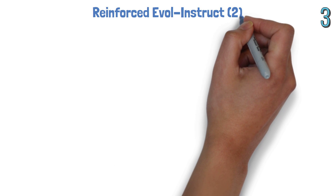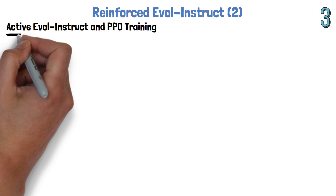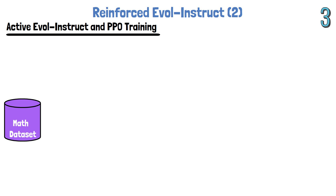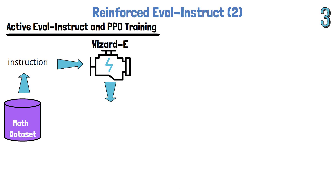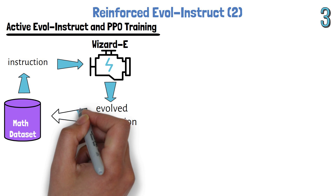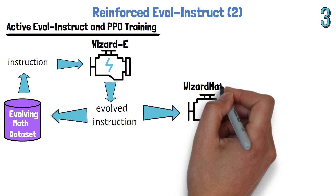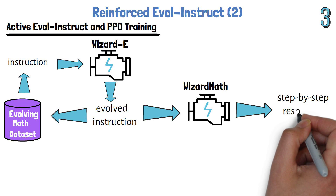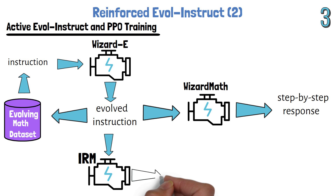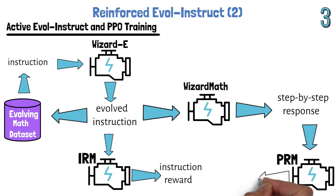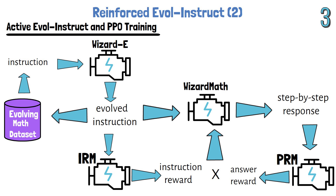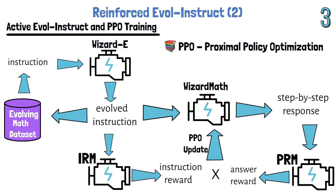Now that we have the trained reward models, let's see how they are used to improve our model. This step is called Active Evol Instruct and PPO Training. We again start with the math dataset created in step 1. On each step we take an instruction from the dataset, evolve it with EvolInstruct using WizardE to get an evolved instruction, and add it back to the instruction dataset — so the dataset is continuously evolving. Additionally, the evolved instruction is provided to WizardMath, which generates a response in a step-by-step format. We then get the evolved instruction reward from the IRM and the answer reward from the PRM. Both rewards are multiplied to get the final reward, and a PPO (Proximal Policy Optimization) update is applied based on that final reward.